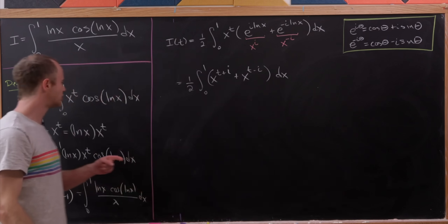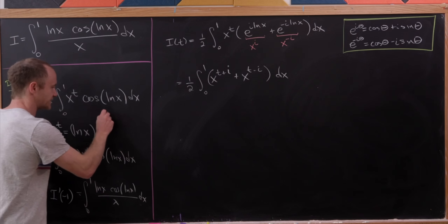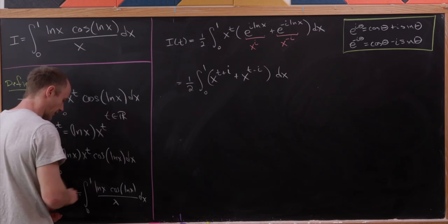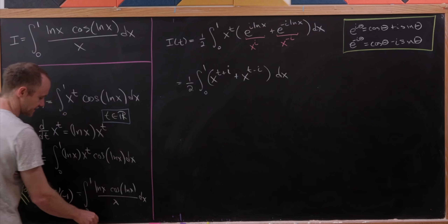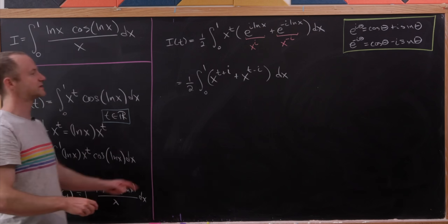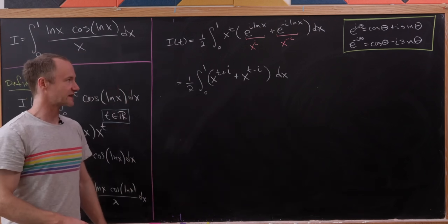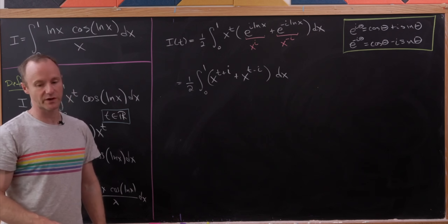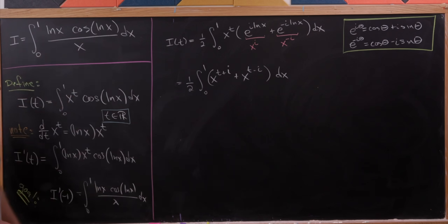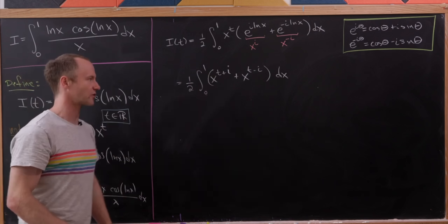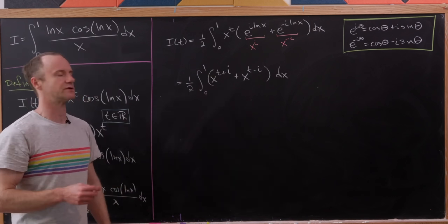It's important to notice that t is a real number here — a real parameter. That's important because we can simply use the power rule to find the antiderivative of this function with respect to x. If t were not real, we could have a negative first exponent for x, which means we couldn't use the power rule.